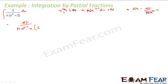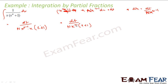With x to the power n equal to t, x to the power n plus 1 becomes t times (t plus 1). So the integral becomes dt by n times x to the power (n minus 1) into x into (t plus 1), which simplifies to dt by n times t times (t plus 1). Since n is a constant, this is 1 by n into the integral of 1 by t(t plus 1) dt.